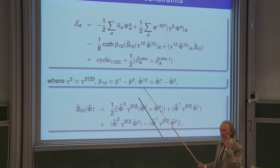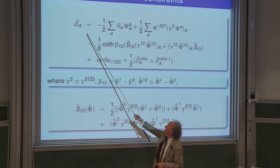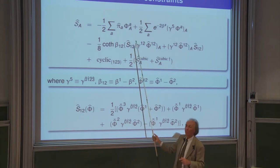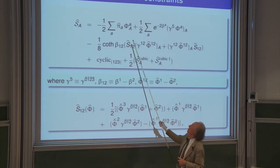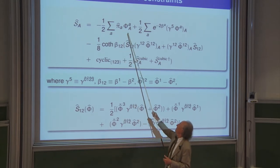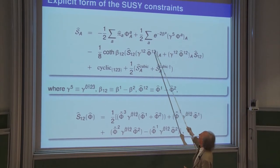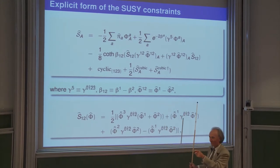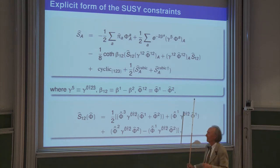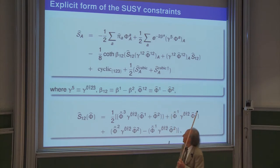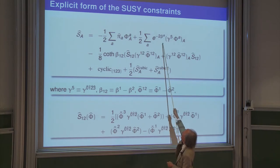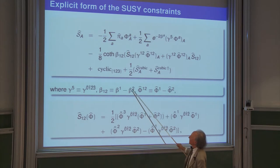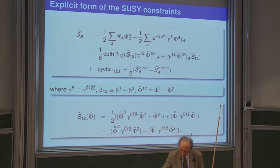We did explicit computations of the supersymmetry constraints, which are operators of the form: a leading term linear in the pi's (i.e., linear in d/d-beta) multiplied by a gamma matrix — like a Dirac equation — plus more complicated terms cubic in the fermions, giving a kind of cubic Dirac equation. In these operators one can already see roots of AE3 appearing, such as 2-beta-1 and the cotangent of beta-1 minus beta-2. This is the first time in this context that people have kept explicitly all the nonlinear terms — cubic in the supersymmetry generators and quartic in the Hamiltonian.